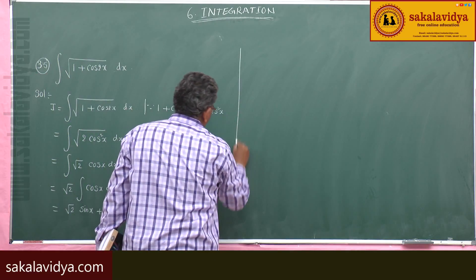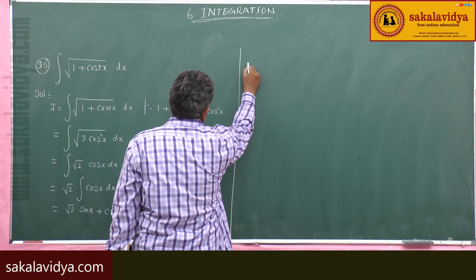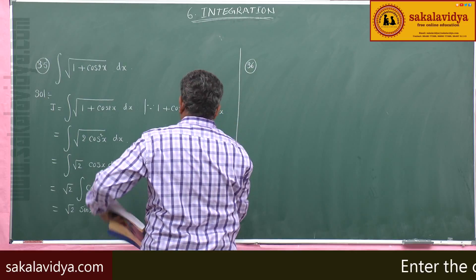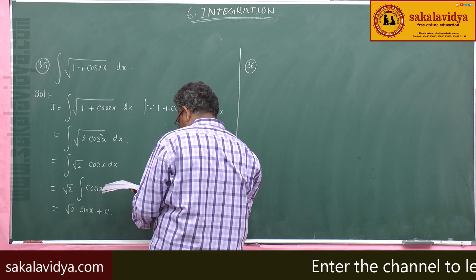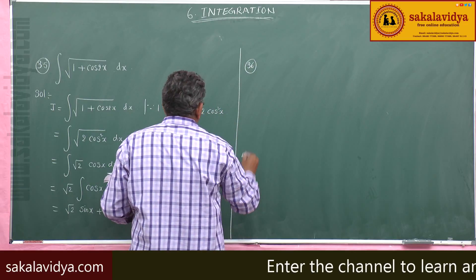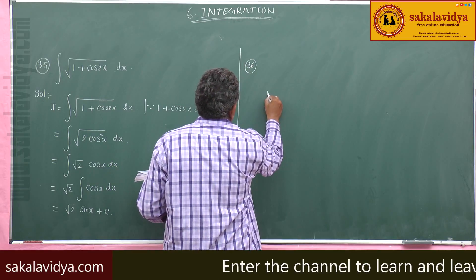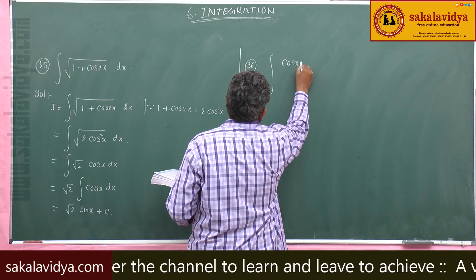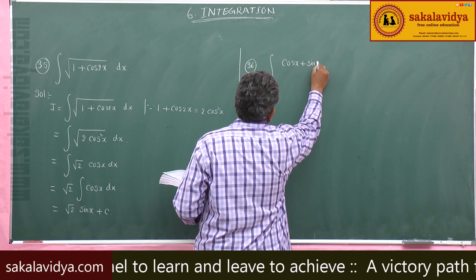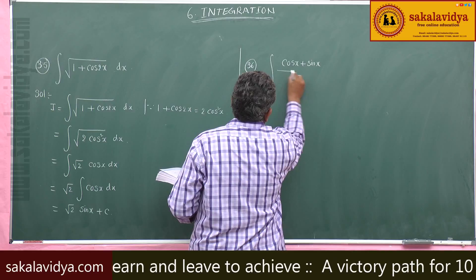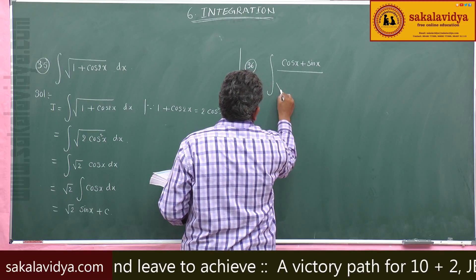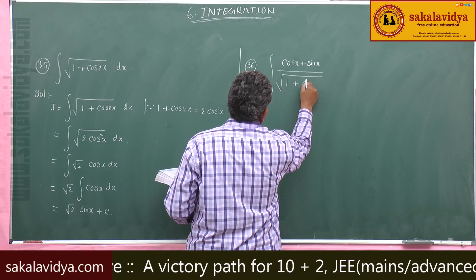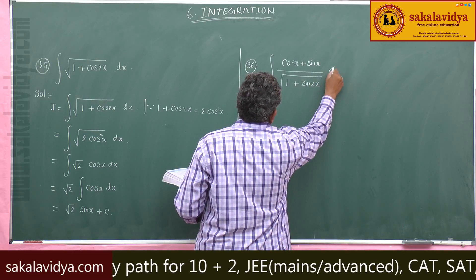Now let us go to the 36th problem. The 36th problem is: evaluate the integral of (cos x plus sin x) divided by the square root of 1 plus sin 2x, dx.